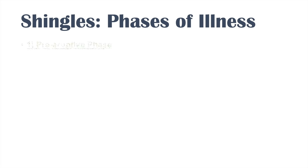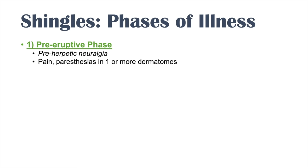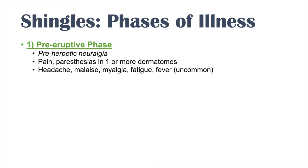Shingles has three phases of illness. The first is the pre-eruptive phase, also called pre-herpetic neuralgia, because there is nerve pain prior to the eruption of herpetiform vesicles. The pain is generally severe and we can see paresthesias — numbness and tingling sensations — usually in one or more dermatomes. The pre-eruptive phase is associated with systemic symptoms like headache, malaise, myalgia, fatigue, and uncommonly fever. This phase generally lasts one to ten days, with pain but no visible rash yet.